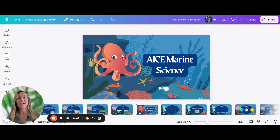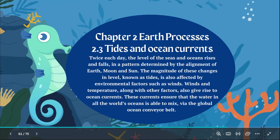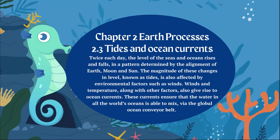We are on part three of chapter two, still on earth processes, and today we're going to talk about tides. When we think about tides, we think about high tide and low tide. Twice each day, the level of the seas and the oceans rise and fall, and that comes from the alignment of the earth, the moon, and the sun. The overall learning goal is to understand what causes high tides and low tides.